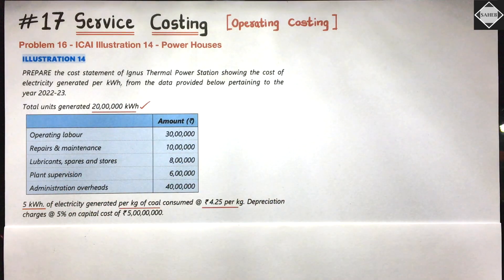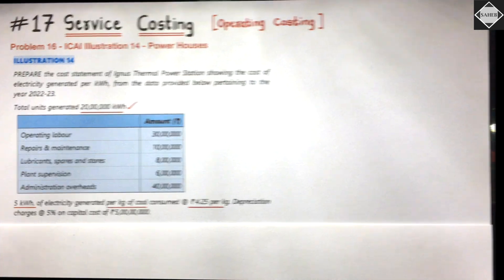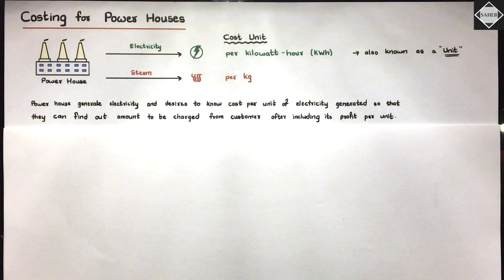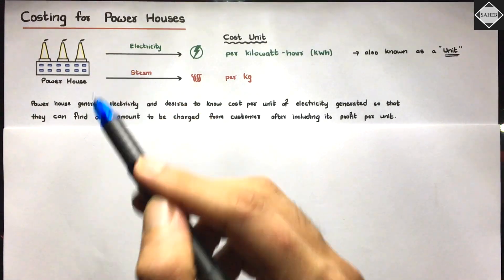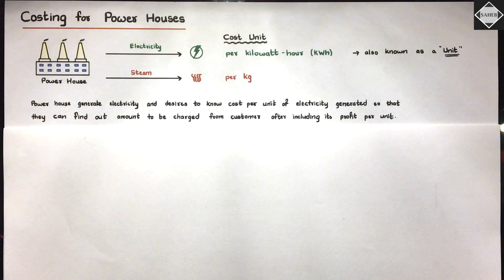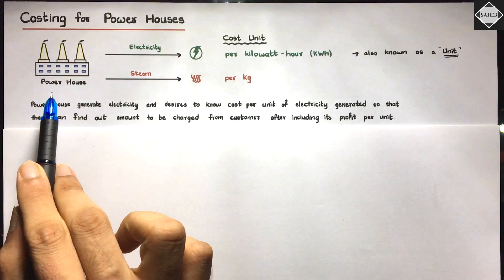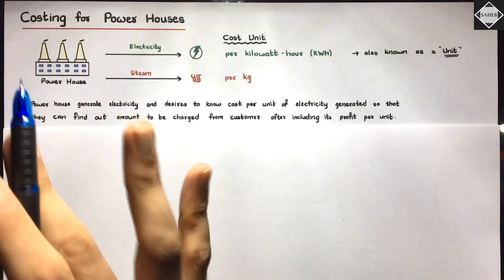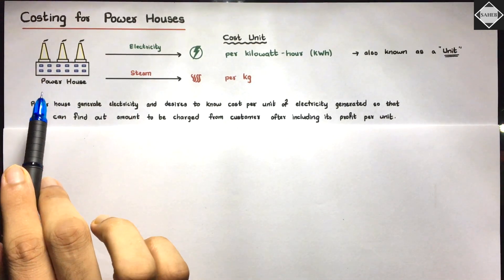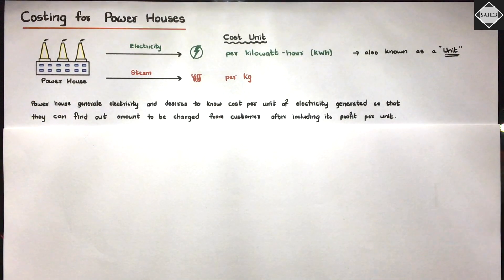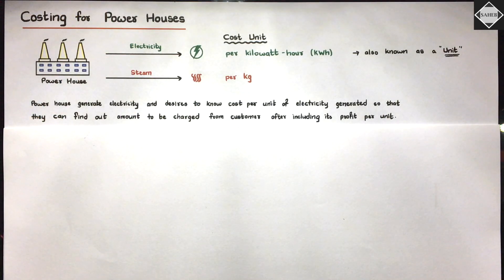Before reading the question, let us understand a little concept about powerhouses. In a powerhouse, we generate power — electricity or steam. If we are generating steam, we call it a boiler house. These companies want to know how much to charge their customers for the electricity or steam they produce, which is where service costing comes into the picture.